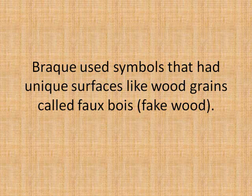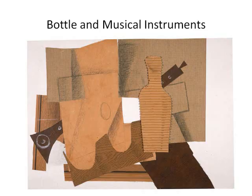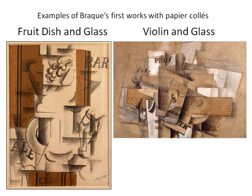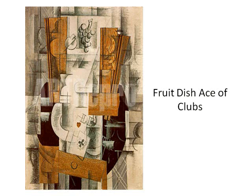Braque used symbols that had unique surfaces like wood grains, called fake wood, and used house painters' combs to create a look of wood grains. He was the first one to use this technique in Cubism. Braque invented Papier-Collé pieces made by posting colorful papers together, and he waited to begin using this new technique until Picasso was away so that he had the first mark on Cubism with the Papier-Collé. Some examples of Braque's first work with this technique were Food, Dish, and Glass in 1912 with charcoal and pasted paper, and Wire Linen and Glass from 1912 through 1913 with oil, charcoal, and pasted paper. Around 1912 through 1913, Braque introduced two signature objects seen in many of his paintings: grapes and heart-shaped lips.